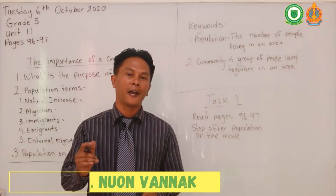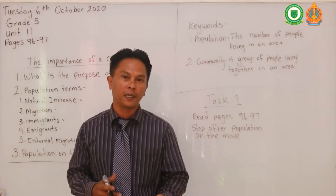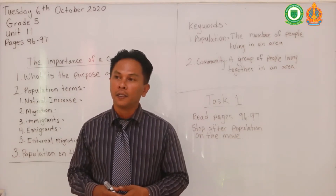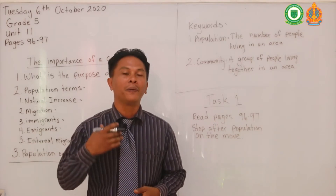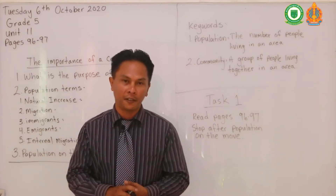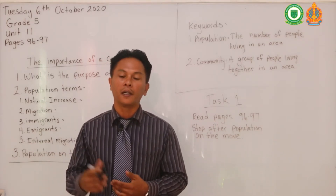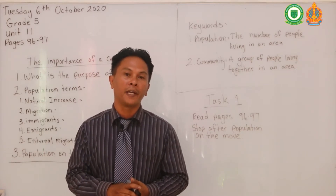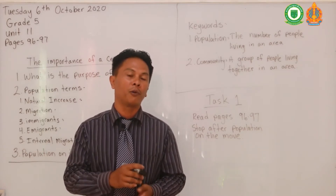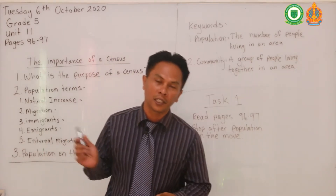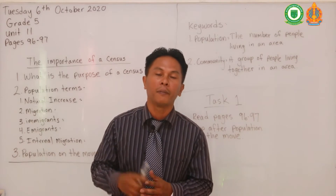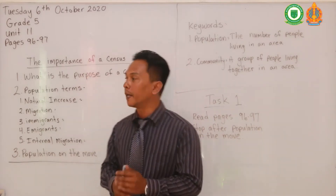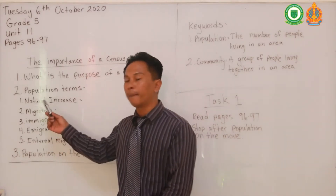A census is like a tally — how many adults live in that area, how many kids live in the area, or how many elders live in the area. Some censuses have different information that they might want to ask you, but these are just some basics coming from the book.